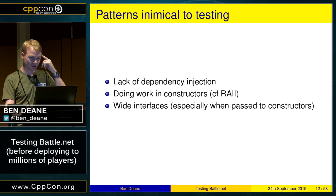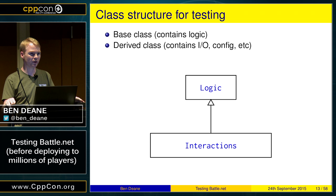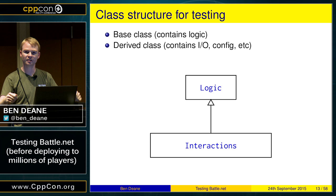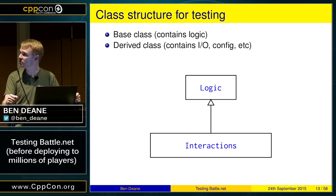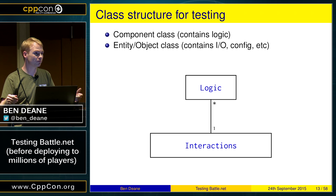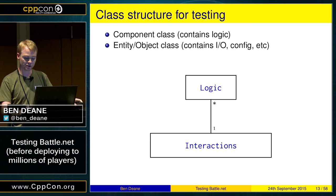I started thinking about alternatives to the traditional interface/implementation split. What if I structured my class so that the base contains all the logic I can test, and then I shunt all the interactions down into the derived class? This is actually quite similar to what it looks like in a compositional pattern — in the games industry we put logic in components and the entity class handles the interactions. Doing it in a hierarchical sense might give me a step towards testing and a way to segregate the logic.